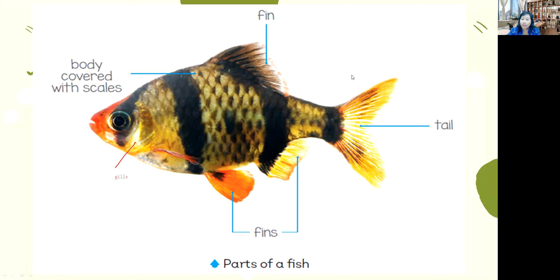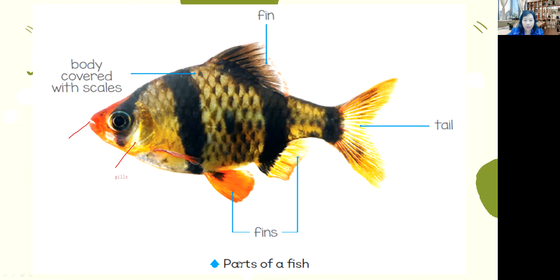What is this part that fish use to move? The body covering of a fish is scales — very good. So fish have scales and fins and tail to move, and they have gills to breathe in water. Fish also have a mouth.